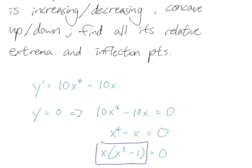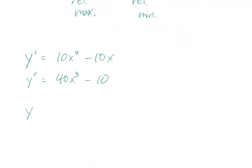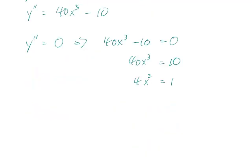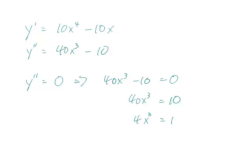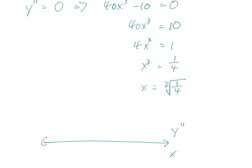Let's look at y double prime. Remember y prime is 10x to the 4th minus 10x, so y double prime, which is just its derivative, is 40x cubed minus 10. Setting y double prime equal to zero means 40x cubed minus 10 equals zero, so 40x cubed equals 10, meaning 4x cubed equals 1. The only real x value is the cube root of one quarter. When doing the sign chart, we don't plug the cube root of one quarter back into y double prime — we plug in values around it.